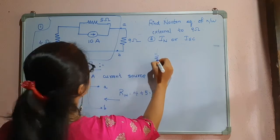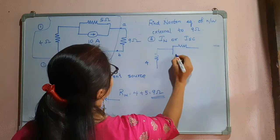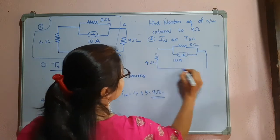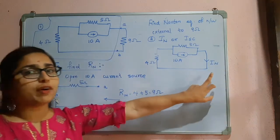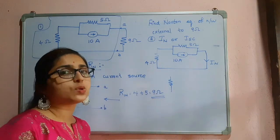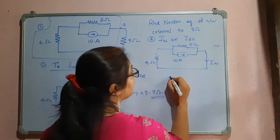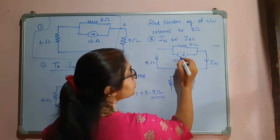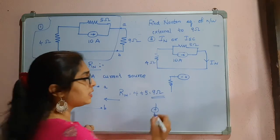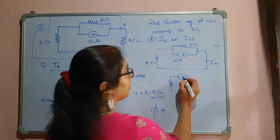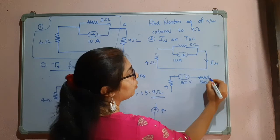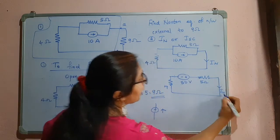I will redraw the circuit now. This is 4 ohm, this is 5 ohm, and this is the 10 ampere current source. Here we are going to get the Norton's current or the short circuit current. What I will do is convert this to a voltage source using the source transformation technique. Taking 10 into 5 gives 50 volts. This is 4 ohm, in series with 5 ohm, and this is the short circuited path — this is my Norton's current.